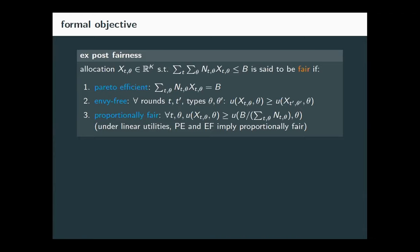First is Pareto efficiency — we want to use all of our budget. Second is envy-freeness — we don't want any individual at round T of type theta to envy what was given to an individual at location T' of type theta'. Third is proportional fairness — there's a naive allocation where you split the budget evenly among everyone, and everyone's utility should be at least as good as that proportional allocation. With linear utilities, proportional fairness follows from Pareto efficiency and envy-freeness, so we really focus on the first two.